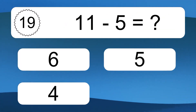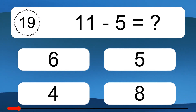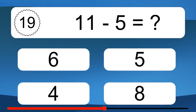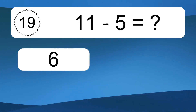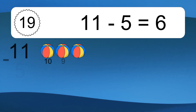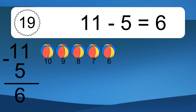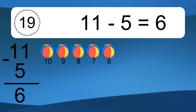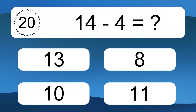11 minus 5 equals what? 11 minus 5 equals 6. Let's count it. 10, 9, 8, 7, 6.